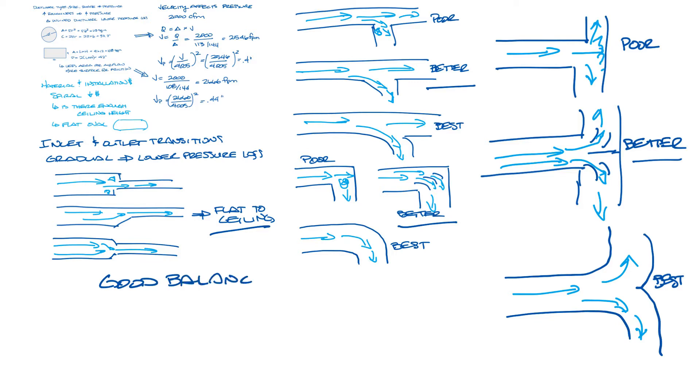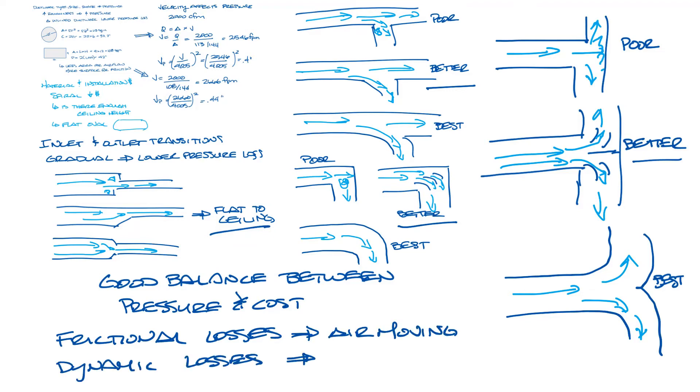You really want to have a good balance between pressure and cost. These different pressure losses fall into two categories: frictional losses caused by the air moving through the ductwork, and dynamic losses caused by disturbances to the air flow from changes in the area or direction.